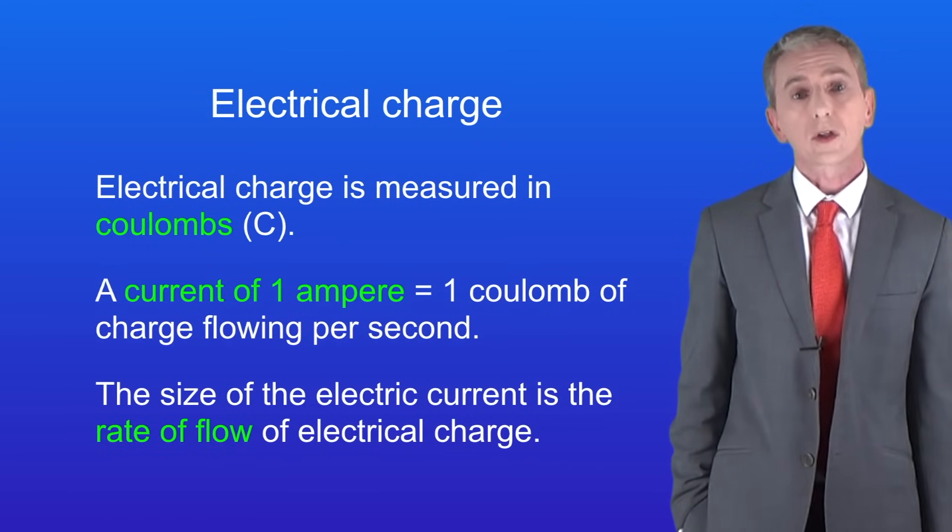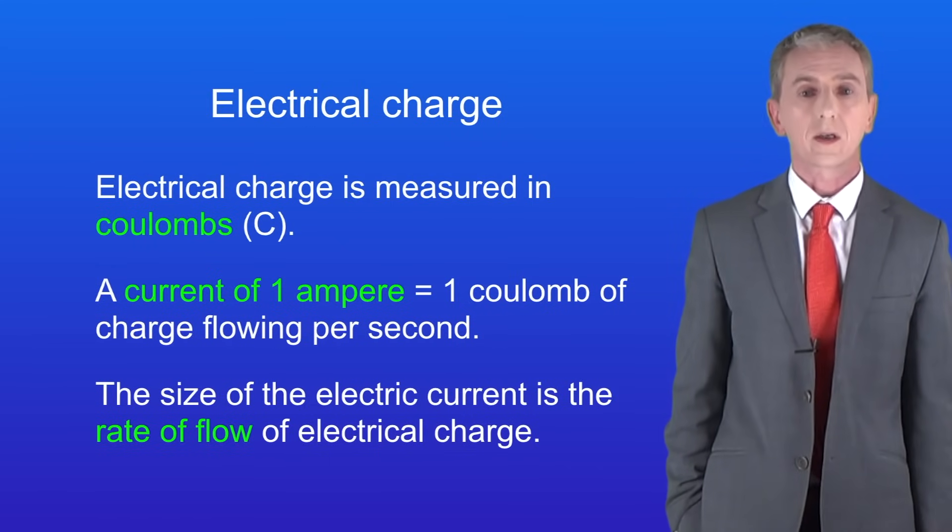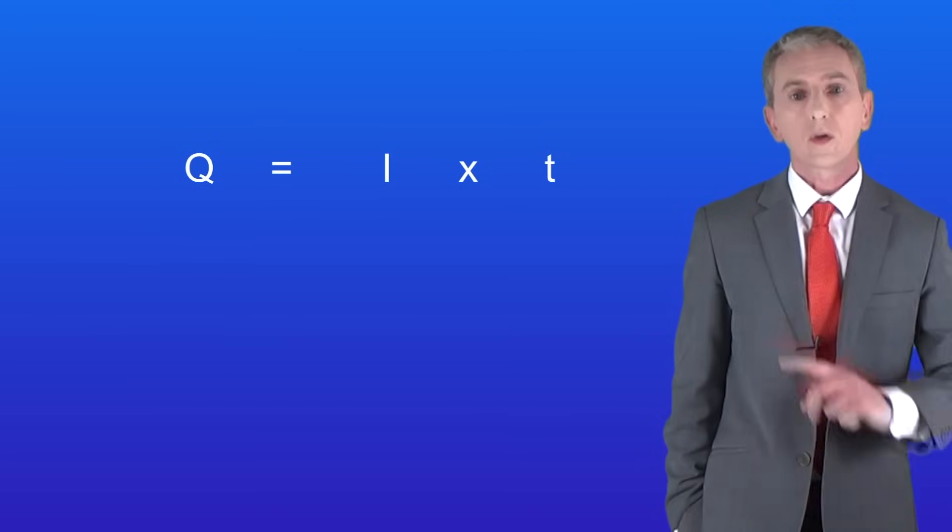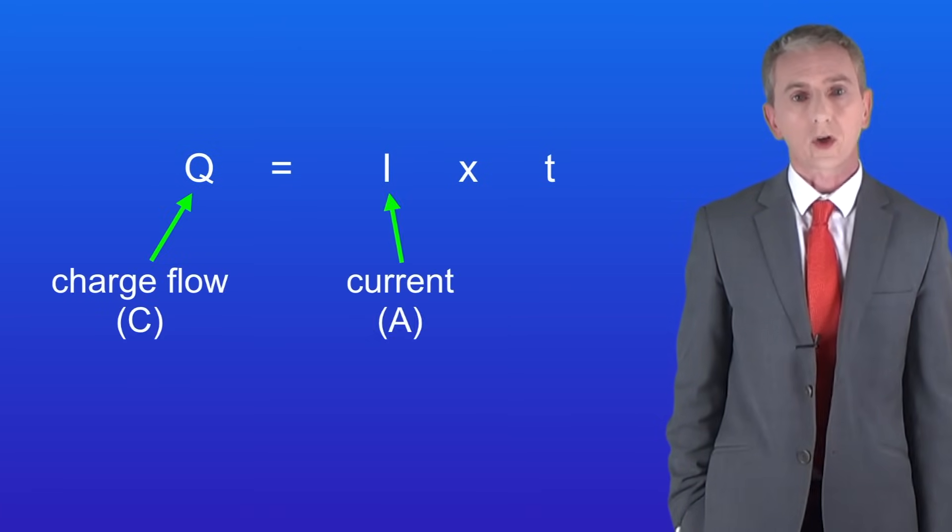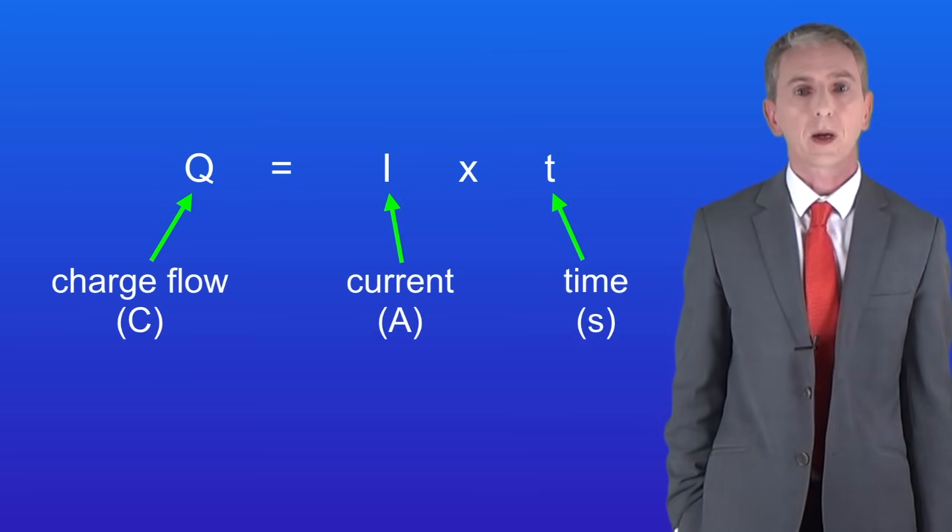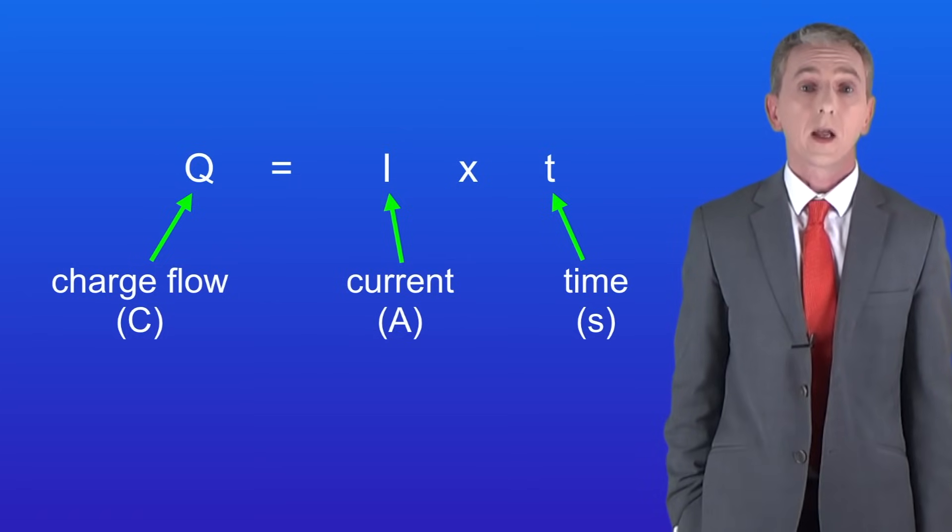Now we can use this to work out the charge flow in a circuit. To calculate that we use this equation. The charge flow in coulombs equals the current in amperes multiplied by the time in seconds. Now you will not be given this equation in the exam so you need to learn it.